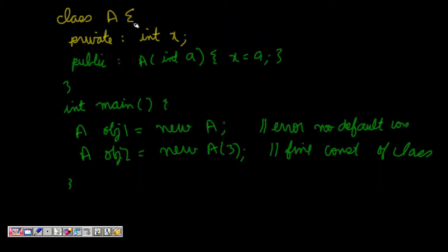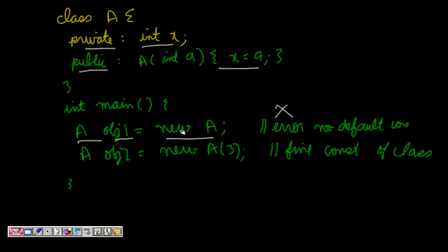But consider 'class A' with private 'int x' and a public constructor 'A(int a) { x = a; }'. Now if I write 'A object1 = new A' it will give an error, because I've written a constructor with one argument so C++ no longer generates the default no-argument constructor. Writing 'A object2 = new A(3)' would work fine. So when defining any constructor, we should consider all cases and include a default constructor as well.